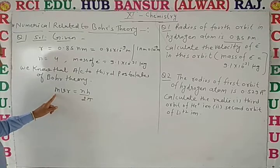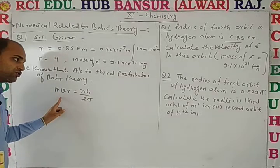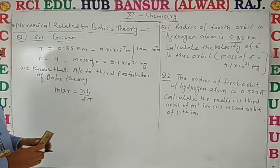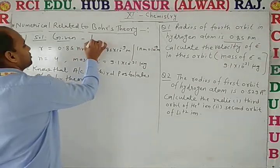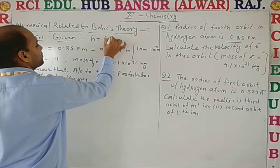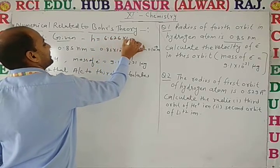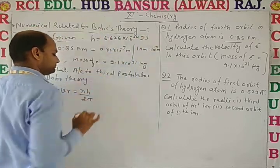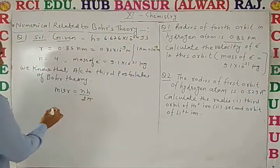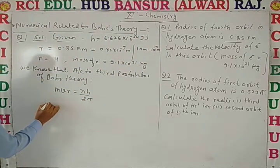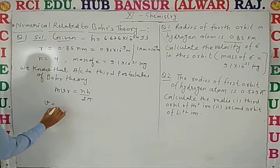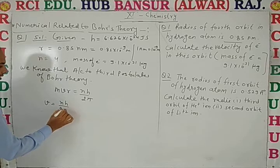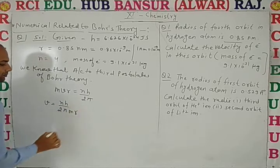So here, mass of electron is given, velocity is to be found, radius is given, n value is given. h is Planck's constant: h = 6.626 × 10⁻³⁴ joule-second. Now rearranging the formula, v = nh / (2π m r).